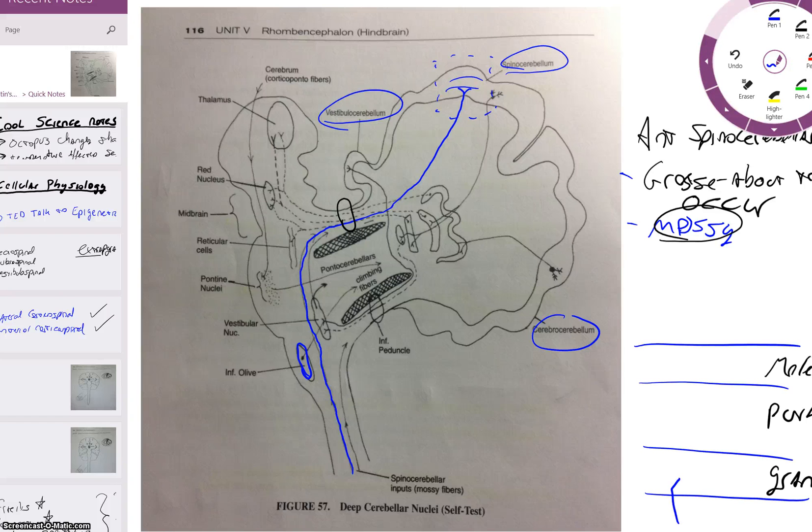So we have the mossy fiber coming in, stopping there. We have a different color for the granular neuron or granular cell. It comes up and makes its way to the top in the molecular layer.